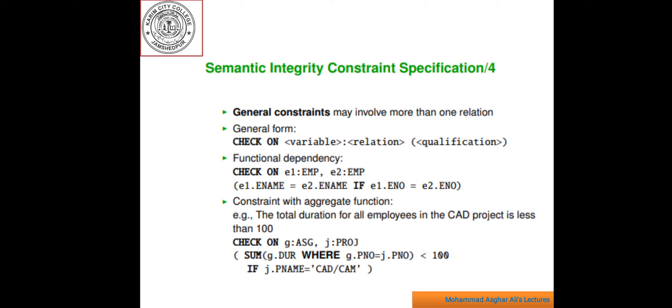For example, functional dependency. The constraint here, express check on e1 colon EMP comma e2 colon EMP bracket me e1 dot ename equal to e2 dot ename if e1 dot eno equal to e1 dot eno e2 dot eno. So, this example is based on the above formula.